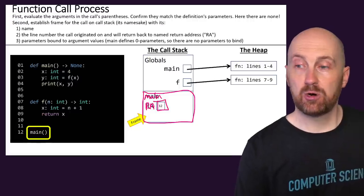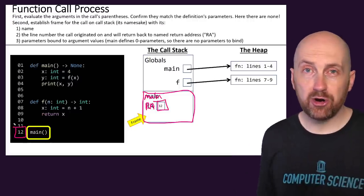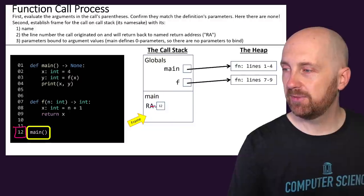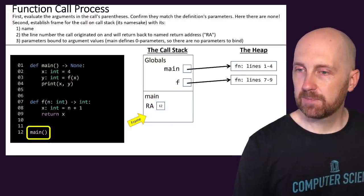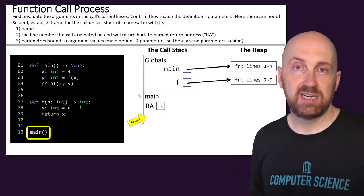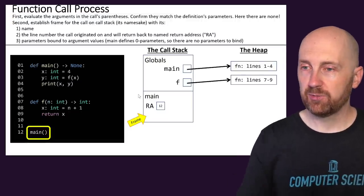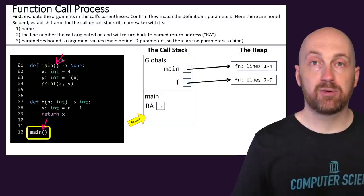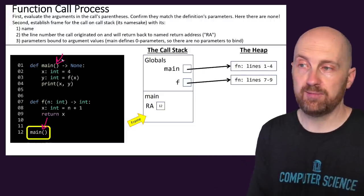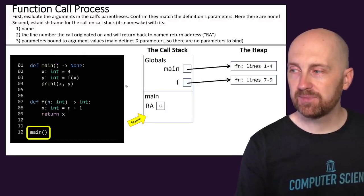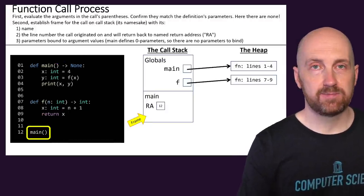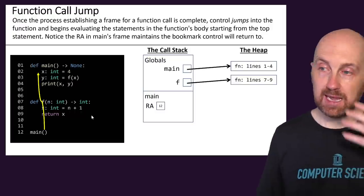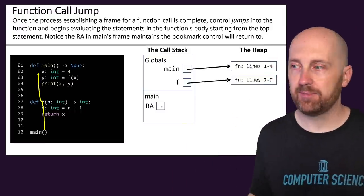We then check: are there any parameters that need to be passed in from arguments? In this case, the argument list for the main function call is empty, and the parameter list of the main function definition is also empty, so there's no parameter passing that needs to occur. With that, we're ready to jump into the main function and start processing its statements from top to bottom.